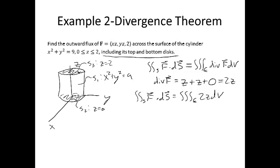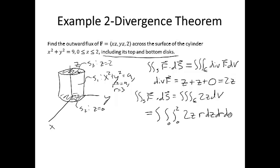Now this is a triple integral like any other you calculated in Calc 3. You can calculate it directly, or you can switch to cylindrical or spherical coordinates if appropriate. In this case, since our boundary is a circular cylinder, it makes sense to switch to cylindrical coordinates. S1 in cylindrical coordinates is r² = 9 or r = 3. So we have the triple integral of 2z; dV in cylindrical coordinates is r dz dr dθ. z goes from 0 to 2, r goes from 0 to 3, and θ goes from 0 to 2π.